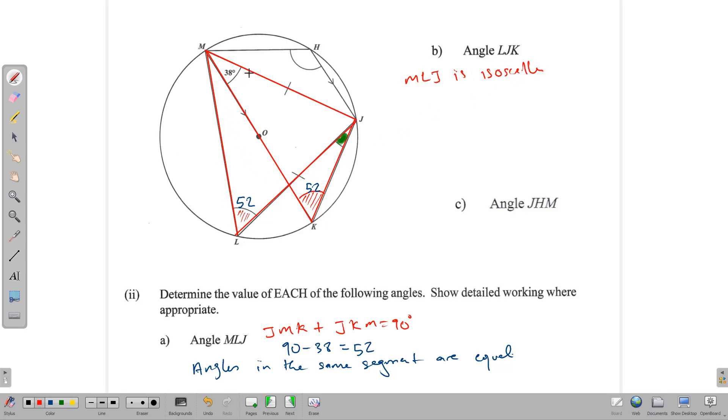And because it is isosceles, then this larger angle here is going to be equal to 52 degrees. So we have that this angle now is going to be 180 minus 2 times 52, which gives us 180 minus 104, and that of course gives us 76 degrees. So this angle here is 76 degrees.